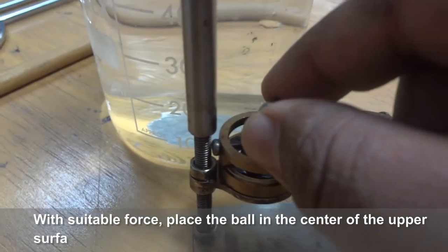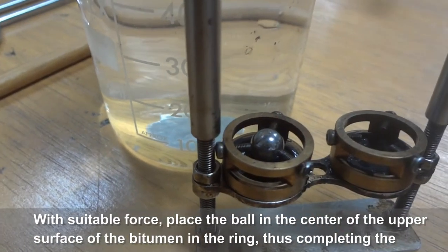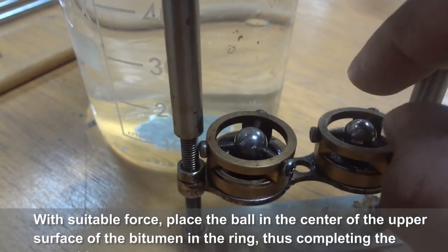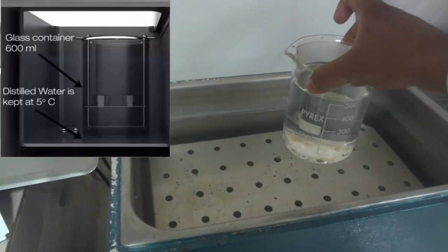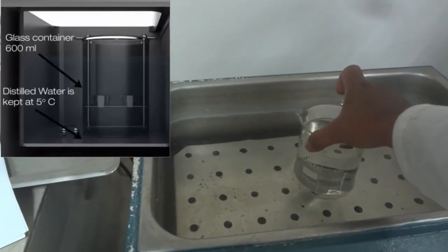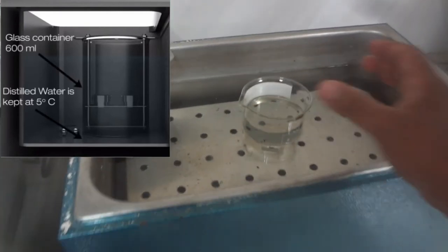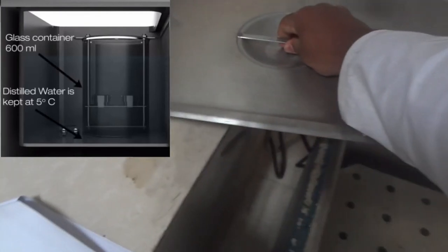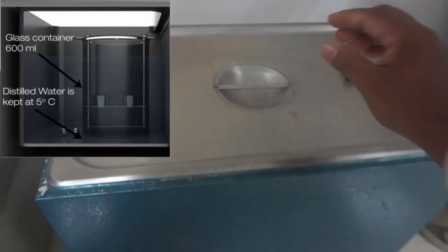Now balls are placed here. At this time, the temperature of distilled water is kept at 5 degrees Celsius in the glass container, which is 600 ml. The temperature is maintained for 15 minutes.